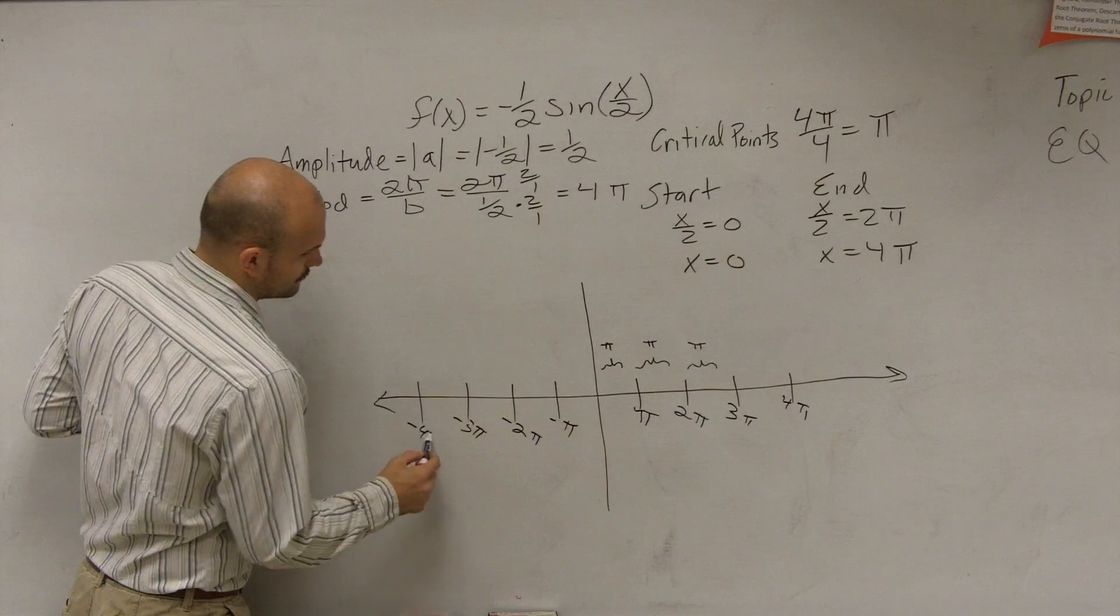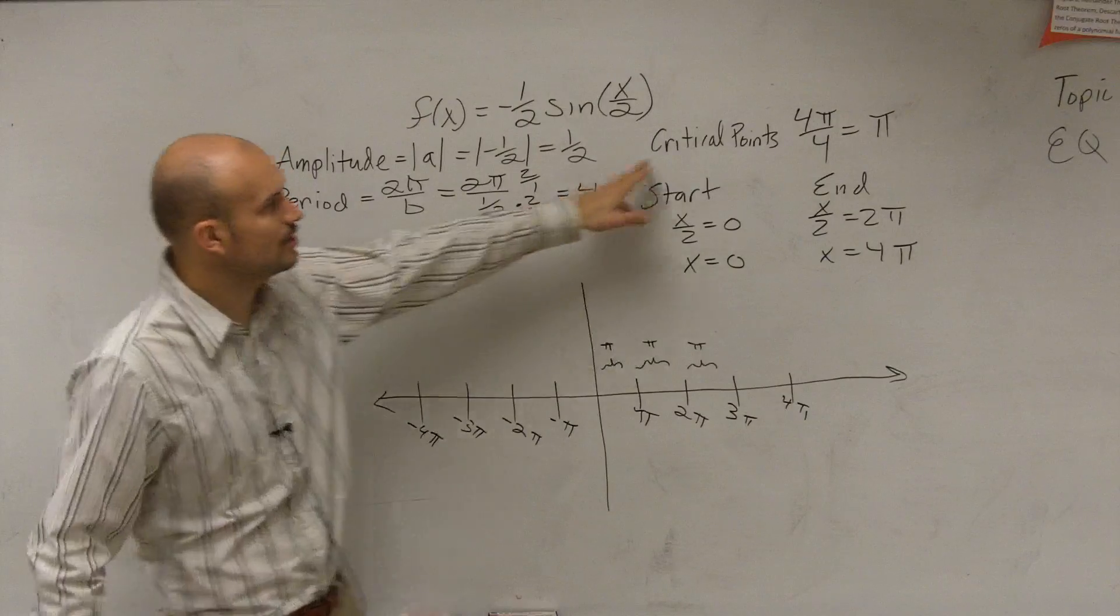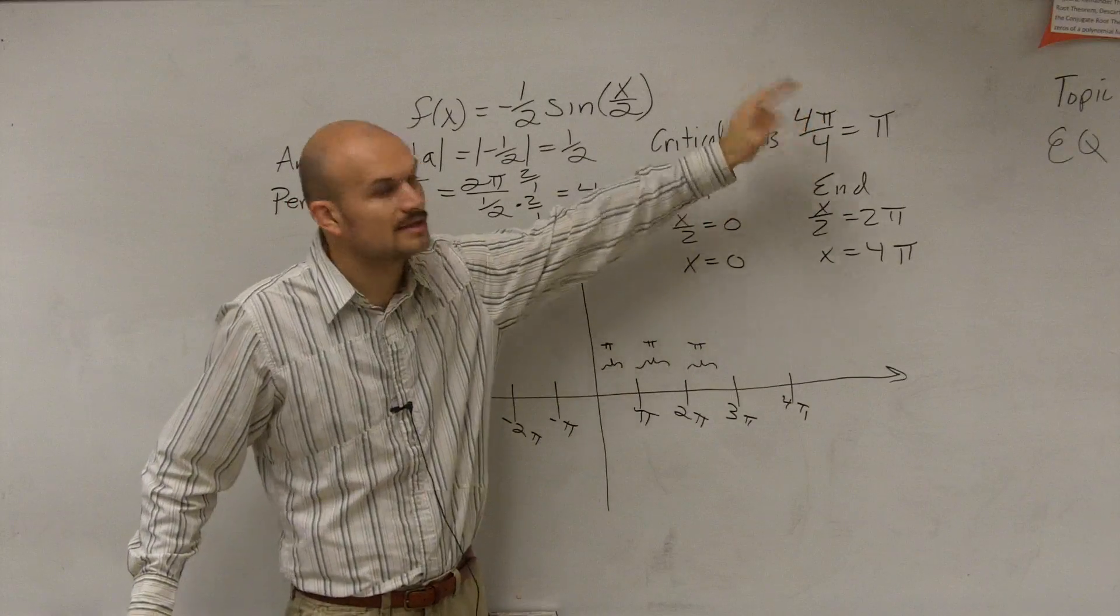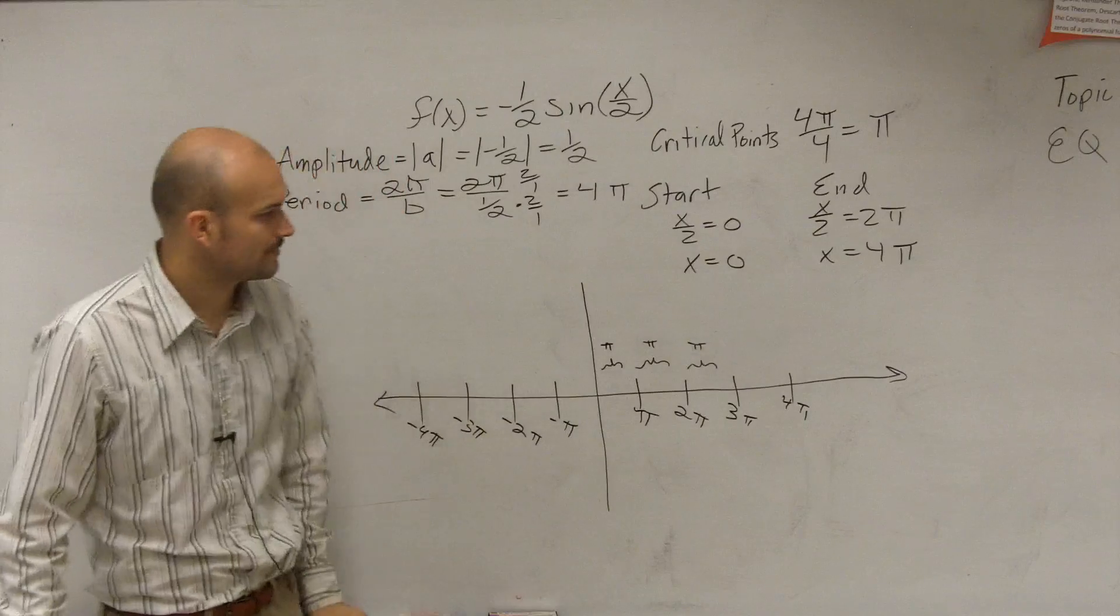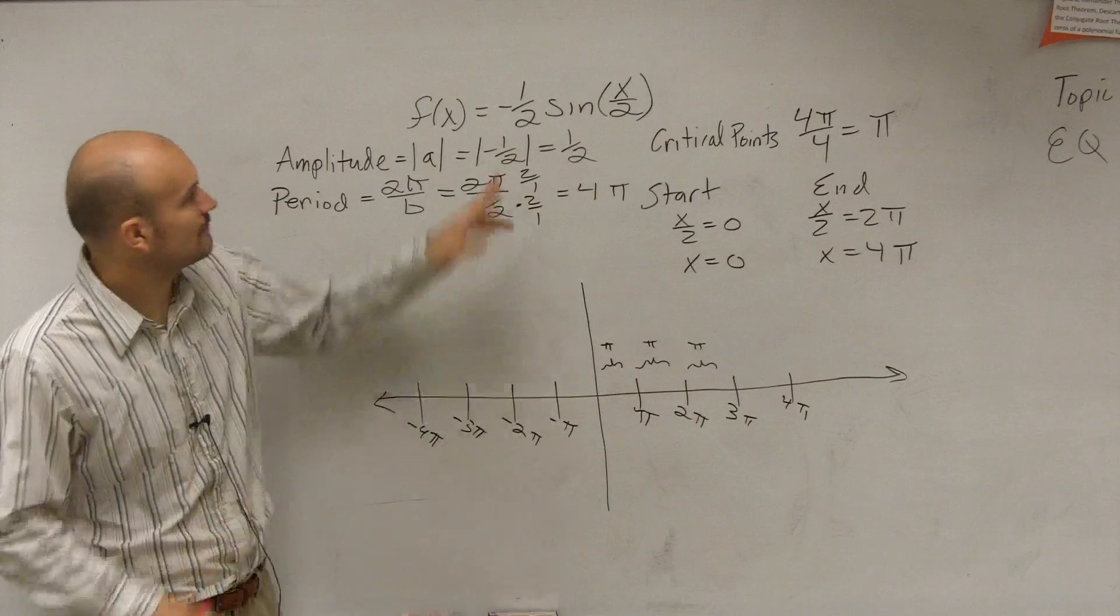Is it always going to be π? No. It's the critical point, which is whatever your period is, divided by four. So it's always going to change. That's why I want you guys to figure it out. So now, let's go through our, looking at our graph.